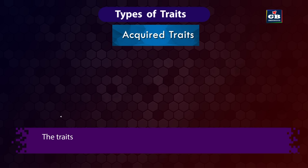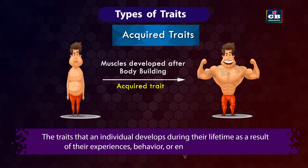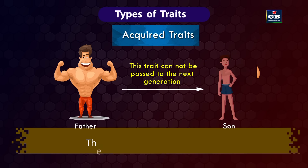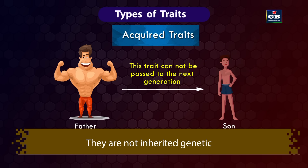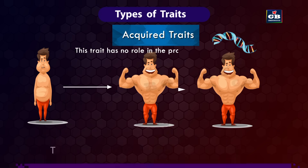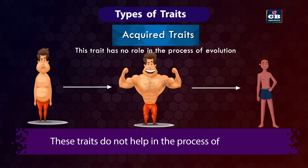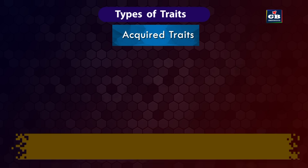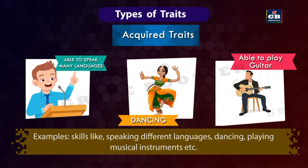Acquired traits are traits that an individual develops during their lifetime as a result of experiences, behavior, or environmental factors. They are not inherited genetically. The DNA of an organism is unchanged due to these traits, and they do not help in the process of evolution. Examples include skills like speaking different languages, dancing, and playing musical instruments.